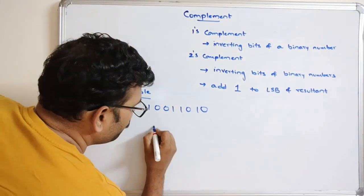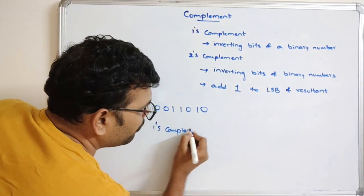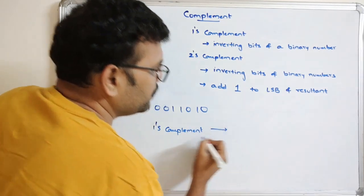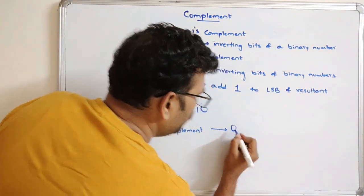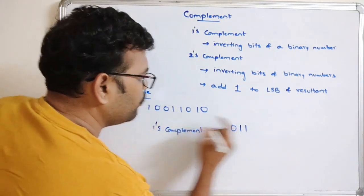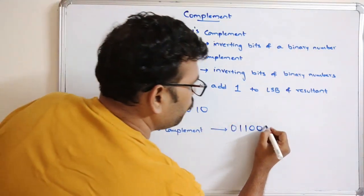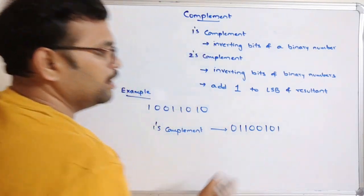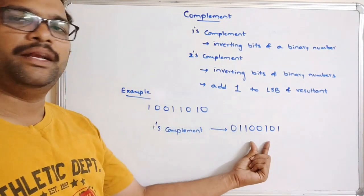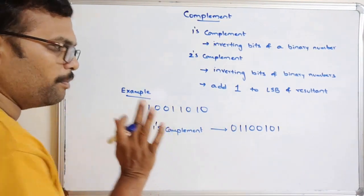1's complement: just inverting the bits. 1 becomes 0, 0 becomes 1, 0 becomes 1, 1 becomes 0, 1 becomes 0, 0 becomes 1, 1 becomes 0, 0 becomes 1, 1 becomes 0, 0 becomes 1. So the 1's complement of 1001101010 is 0110010101.